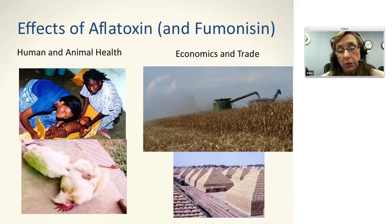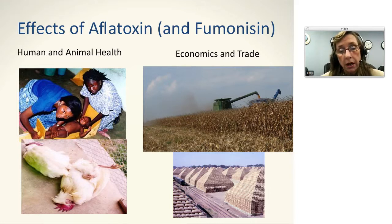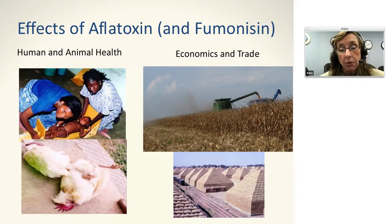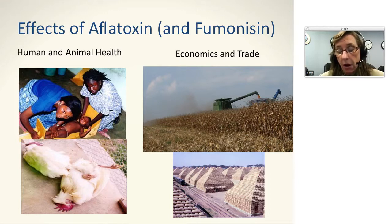So much groundnut was produced that it created these pyramids of bags ready to be exported. You're seeing human health consequences which include liver cancer in humans, but particularly for this audience we're looking at stunting in children, animal loss and poor feed conversion when toxins are in the food, outright economic loss to growers, and huge trade losses to the entire continent of Africa, but also others.